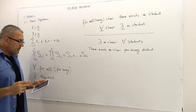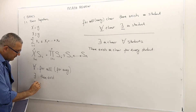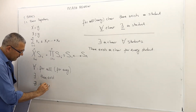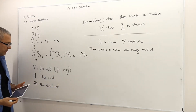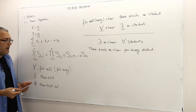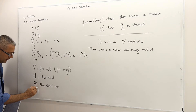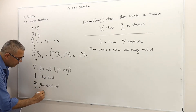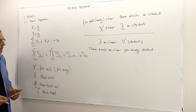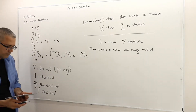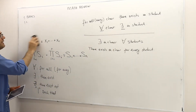Sometimes we use 'there exists not', or 'there doesn't exist' — that's sort of the negation of 'there exists'. And this term usually means 'such that', and I will use it in a moment. Alright, so let's now talk about sets.